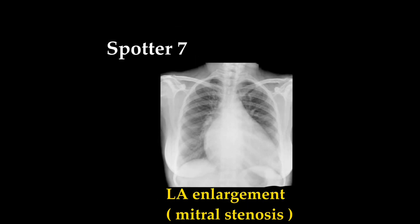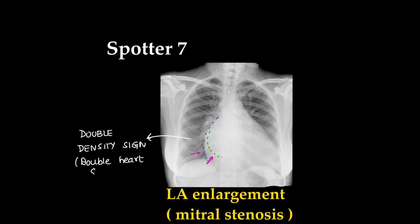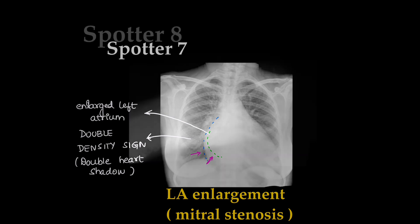This is a chest x-ray which shows left atrial enlargement due to mitral stenosis. Here we can see the double density sign, nothing but the left atrium and right atrium shadows overlapping each other. This is the enlarged left atrium shadow which is coming behind the right atrium.